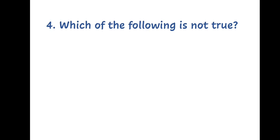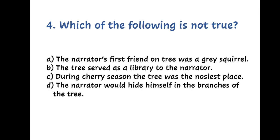Question 4. Which of the following is incorrect? A. The narrator's first friend on the tree was a grey squirrel, B. The tree served as a library to the narrator, C. During cherry season, the tree was the noisiest place, or D. The narrator would hide himself in the branches of the tree.